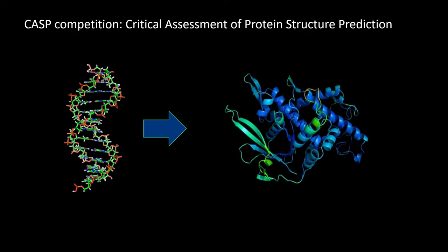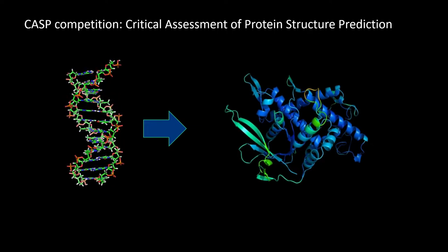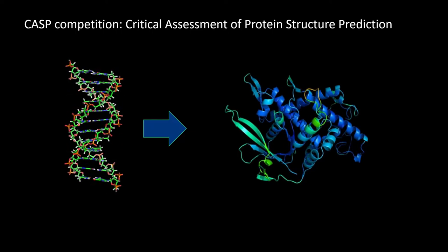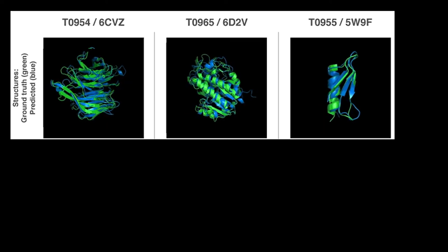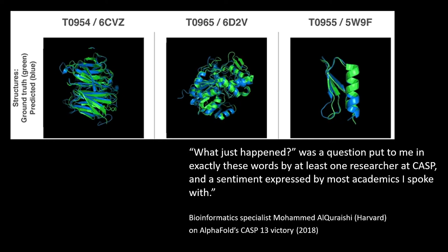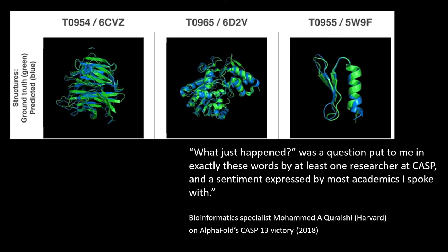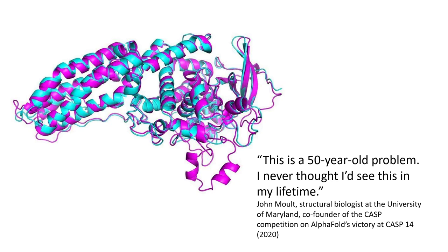Different area — Google again. There's a competition called CASP where the question is: how does a specific strand of DNA translate into a protein? It's a very important question for all of biotechnology, including vaccine development. DeepMind took part in that competition for the first time in 2018 and won with flying colors. A Harvard scientist there said: what just happened? — a sentiment expressed by most academics present. Two years later, the follow-up system beat the competition again by such a wide margin that one of the founders of the competition said: this is a 50-year-old problem — I never thought I'd see this in my lifetime.